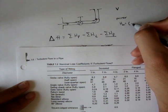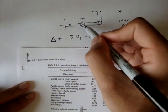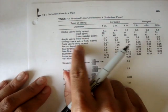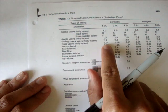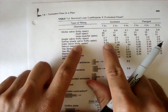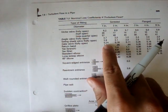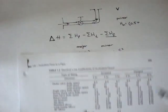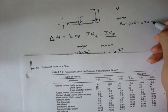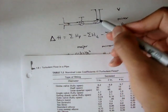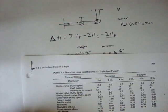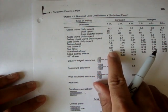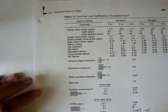So, for the entrance, it would be 0.5 plus a gate valve that's fully open, and if we look on the fully open gate valve, it's different for each diameter. Let's say it was just a 1-inch screwed gate valve that was fully open. The K value would be 0.24, 0.24 plus the standard threaded elbow. And again, let's just say it's a 1-inch diameter screwed standard elbow. Well, the K for that is 1.5.